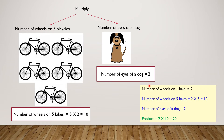Now let's do the final step. Number of wheels on one bike is two. Number of wheels on five bikes is two times five, which is ten. The number of eyes of a dog is two. So the product will be two times ten, which is twenty. Yay!